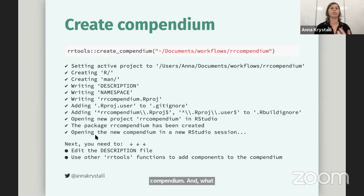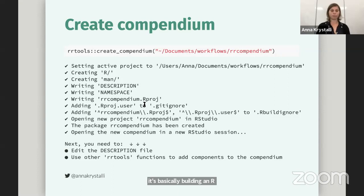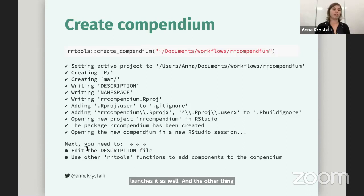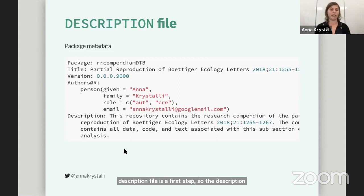Another thing I really like about the functions is that there's a little checklist at the bottom prompting you towards next steps and further information. Here it mentions editing the description file as a first step. The description file is basically the backbone of an R package, and its first role is to collect metadata about our package — or in this case, our compendium. This would be titles, versions, details of all the authors, and maybe a description as well. Once we've completed that information, we can prepare our research compendium for sharing using the use_readme_rmd function. The first thing it does is create a template readme that is much more appropriate for a research compendium, guiding researchers towards completing all the information required.